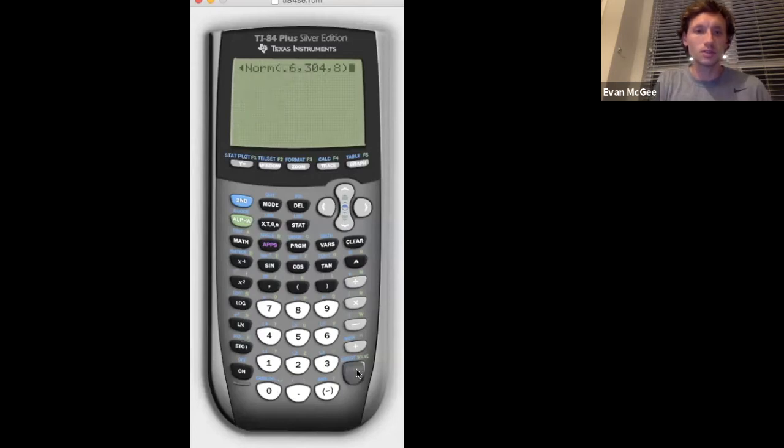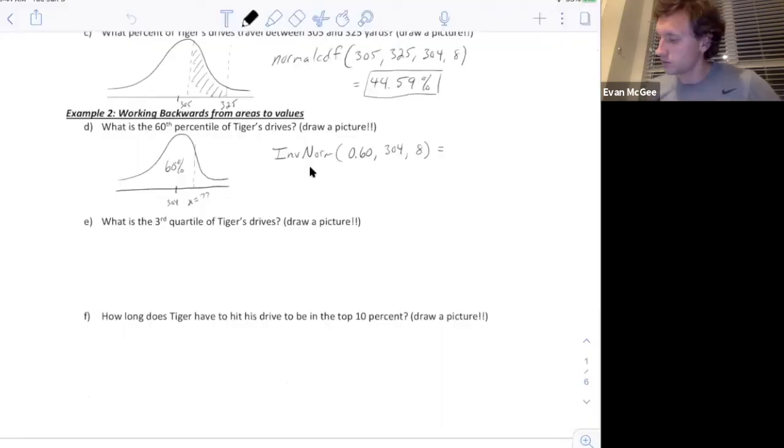In our calculator, we're going to go second distribution. There's our inverse norm right beneath normal CDF. It's going to ask me for three things. The area, which I said was 60%, the mean is 304, and the standard deviation is 8. This will tell me 306.03 is how far his drives need to go for the 60th percentile. So 306.03 yards.